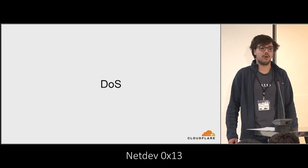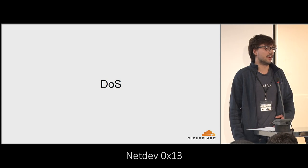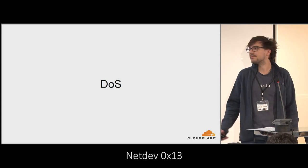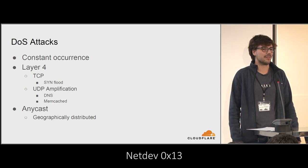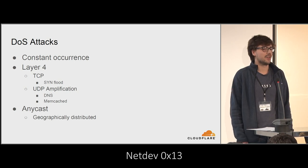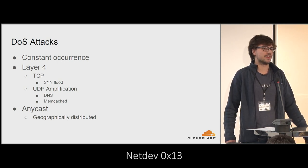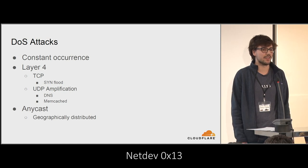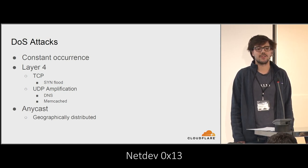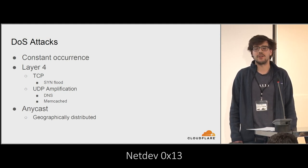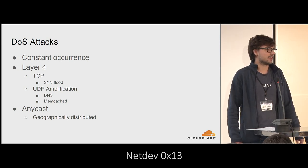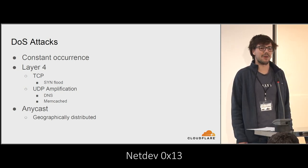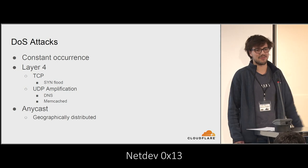A bit about what a denial-of-service attack is and what we see on our end. It's pretty much a constant occurrence — it's just a part of doing business for us. We are under distributed denial-of-service attacks every day, all the time. There's always attacks somewhere. For the purpose of this talk, we're mostly going to focus on layer four denial-of-service attacks, and we're going to forget about L7, because those are much more complicated.